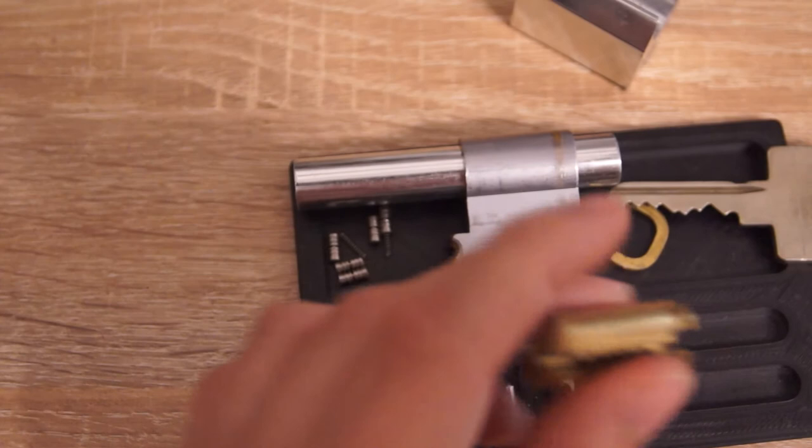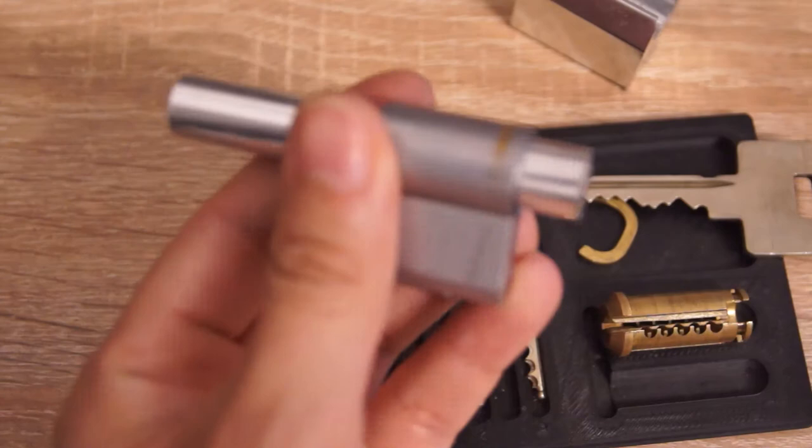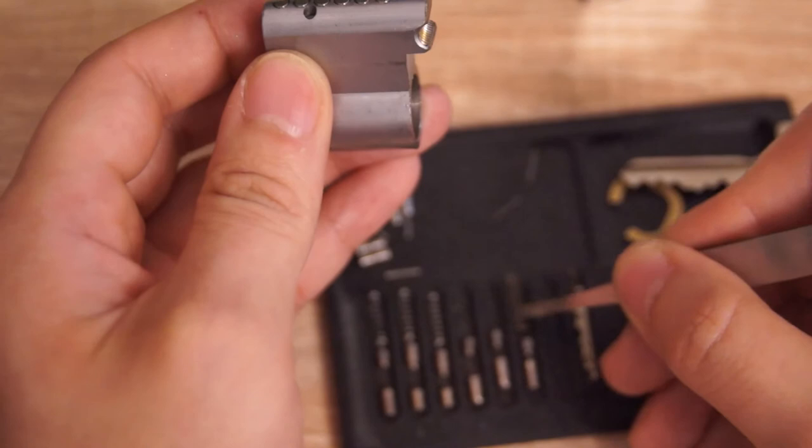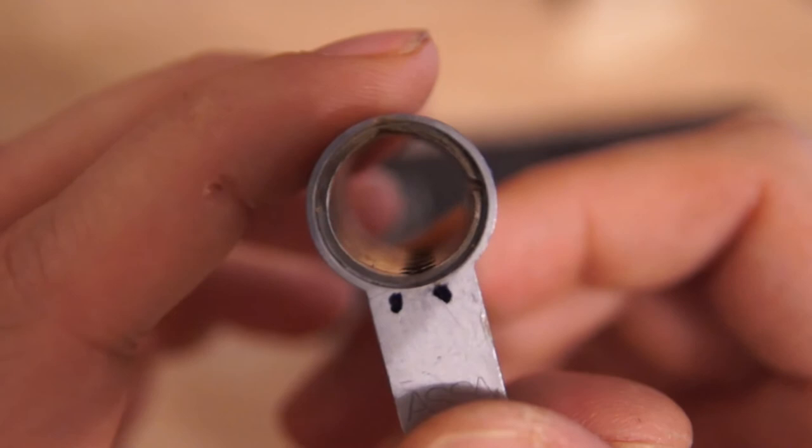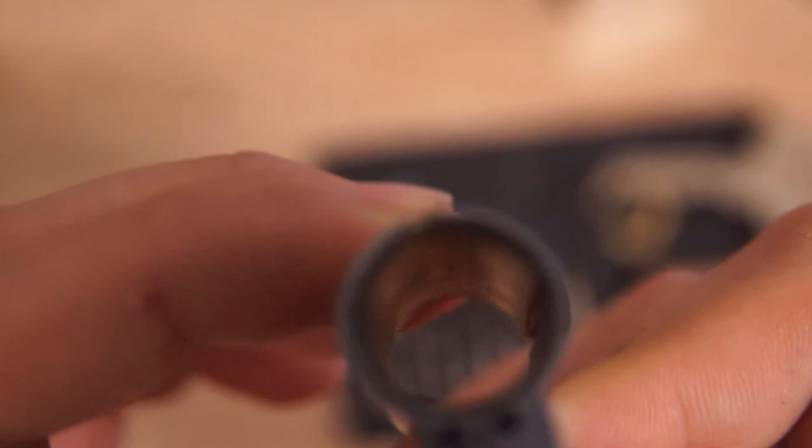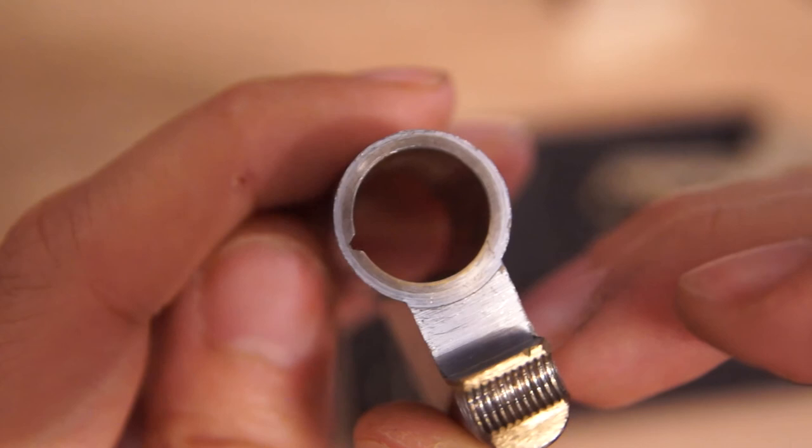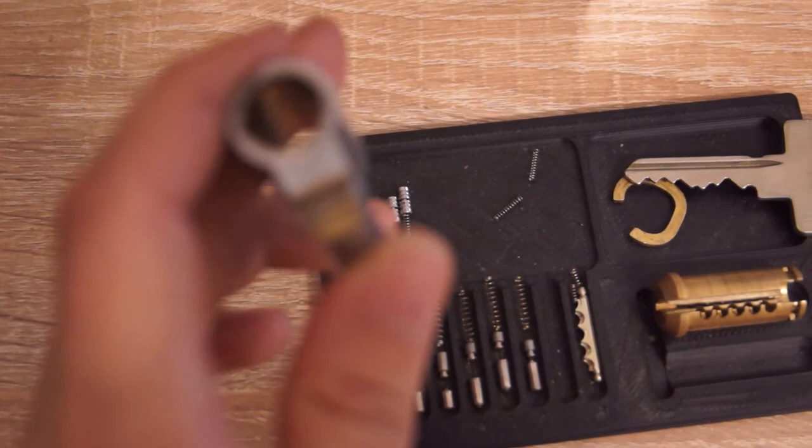Now, let's remove the driver pins. A close look at the lock body. Nothing very special here. Just the sidebar groove and the chambers for the drivers.